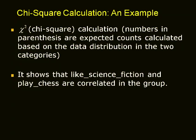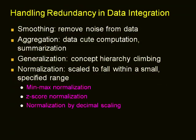For categorical data, we use the chi-square test. Data transformation involves transforming or consolidating data into suitable forms appropriate for mining. There are different transformation methods. The smoothing method is used to remove noise from the data. Aggregation, data cube computation, and summarization are helpful to reduce the data. Binning, regression, and clustering also belong to the category of smoothing methods.